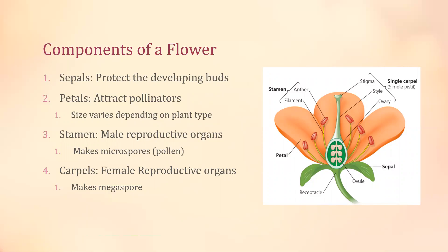The next component is petals. Of course we all know what petals are — they're the bright, colorful leaves. Their main purpose is to attract pollinators. One thing to know is that the size of petals can actually vary depending on the plant type and how it spreads its pollen.